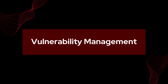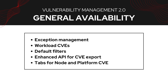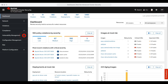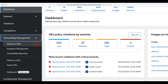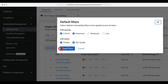First up, let's talk Vulnerability Management. The ACS team is thrilled to announce that Vulnerability Management 2.0 updates are now all generally available. This announcement includes the exception management, workload CVE, vulnerability management reporting tabs, improvements to default filters, enhanced APIs for CVE export, and node and platform CVE information tabs. These significant updates aim to provide actionable vulnerability data, prioritizing critical fixes to reduce cluster risk.